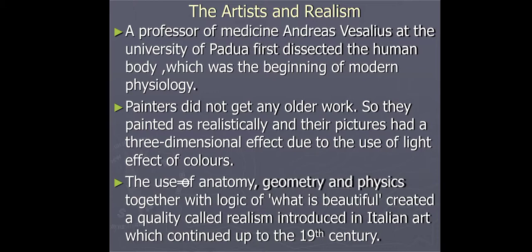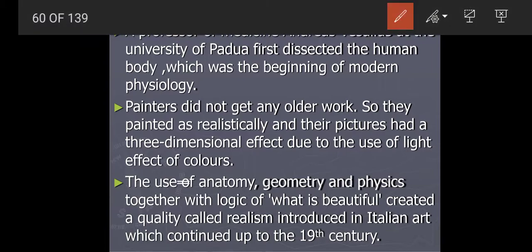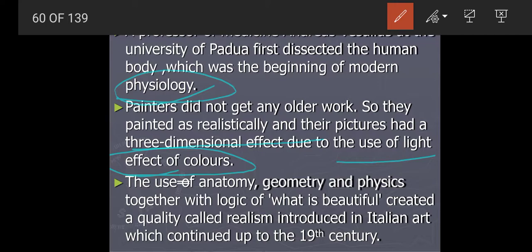A professor of medicine, Andreas Vesalius, at the University of Padua, first dissected the human body, which was the beginning of modern physiology — the study of the human physique. Painters aimed to paint as realistically as possible, and their pictures had a three-dimensional effect due to the use of light and color. If you look at the picture from all three sides, the portrait seems to look back at you. The use of anatomy, geometry, and physics together with logic created a quality called realism, introduced in Italian art, which continued up to the 19th century.